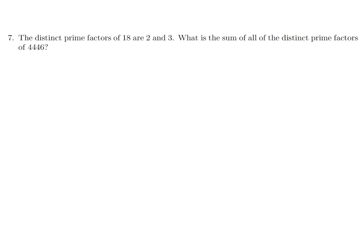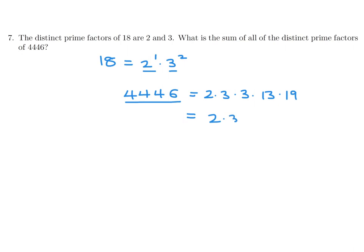The distinct prime factors of 18 are 2 and 3. What is the sum of all distinct prime factors of 4446? Factoring: 4446 equals 2 times 3 squared times 13 times 19. So the distinct prime factors are 2, 3, 13, and 19. Adding them up: 2 plus 3 plus 13 plus 19 equals 37.